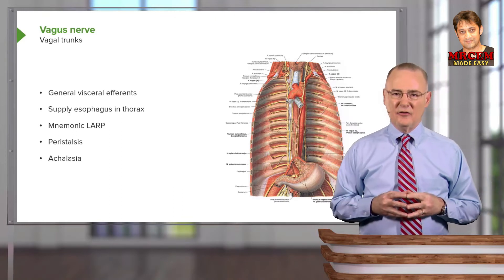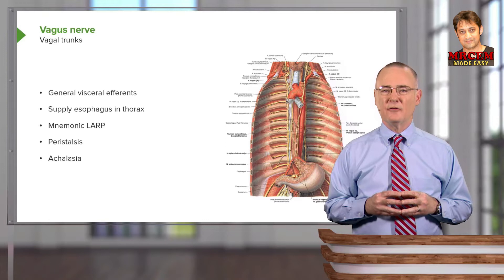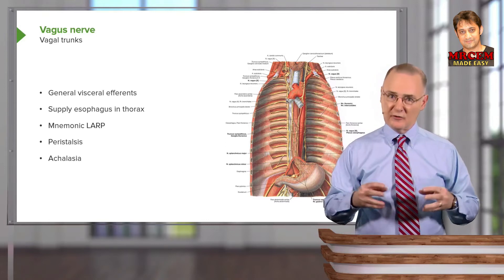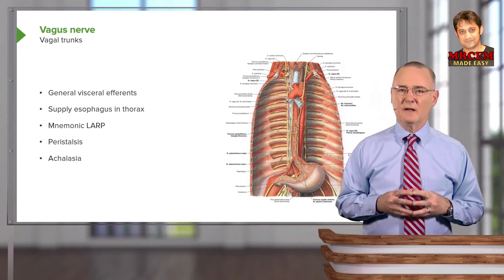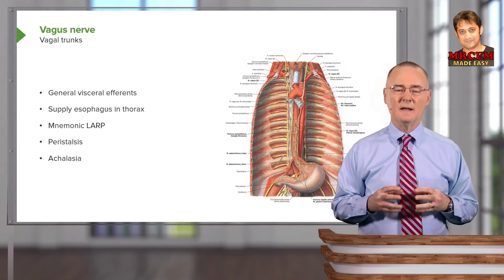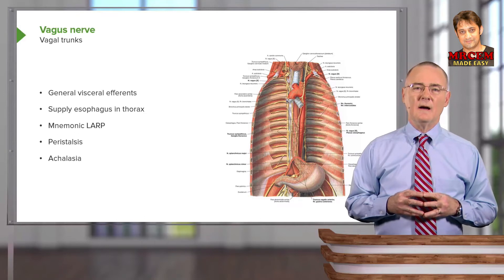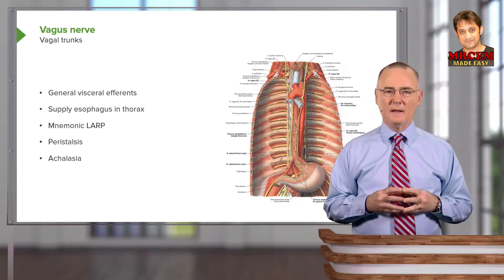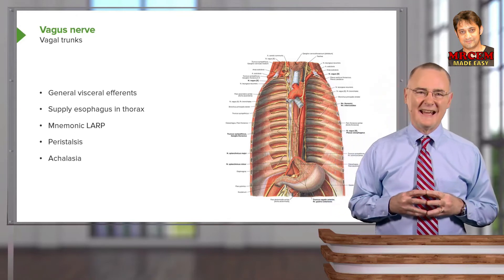If there is damage to the parasympathetic components anywhere along this pathway — within the wall of the esophagus, a mediastinal mass compressing the vagus, or even a stroke affecting the motor nuclei — any of those events can cause failure of the lower esophageal sphincter mechanism, resulting in a disease called achalasia.